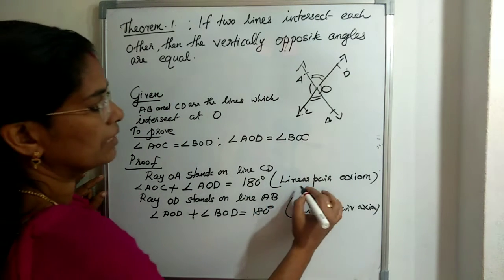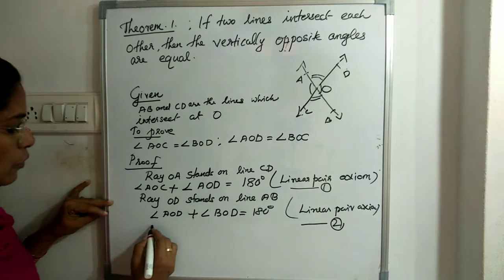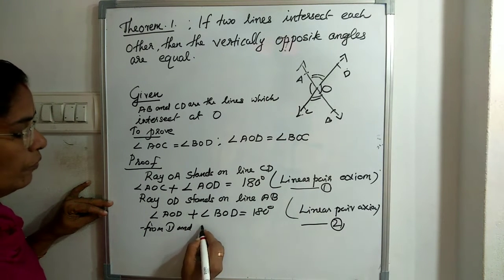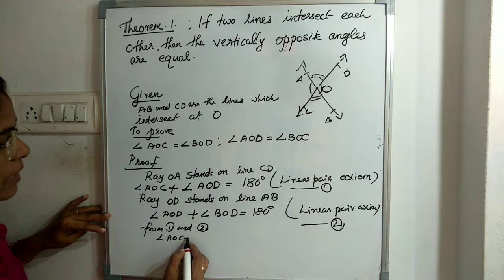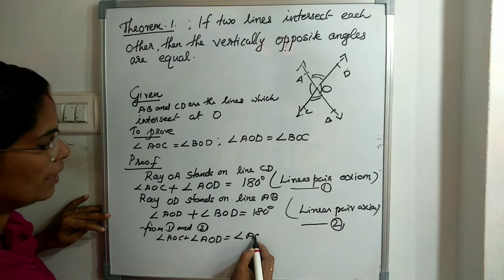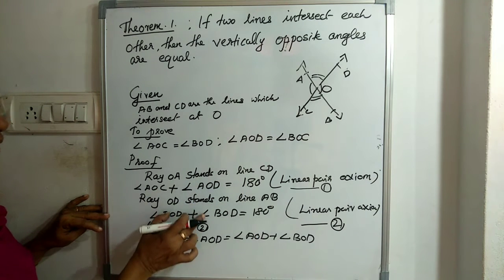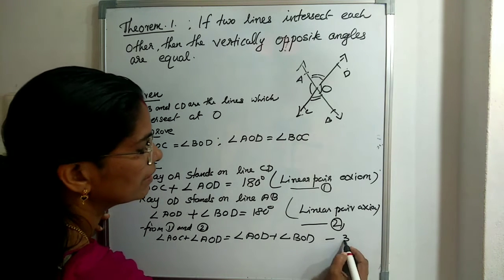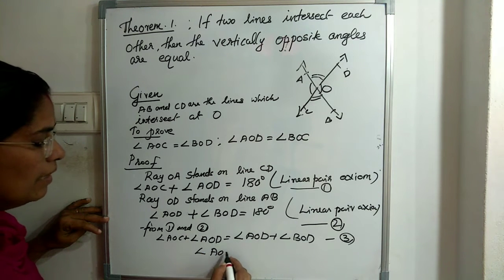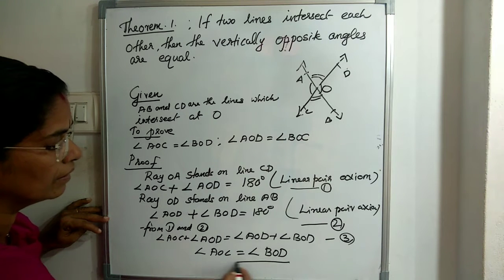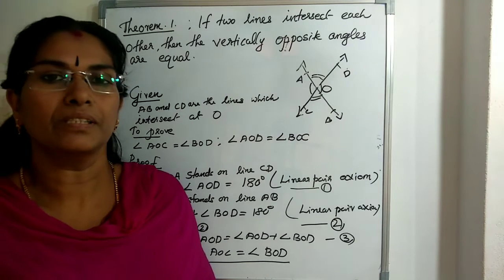We can label the two results as equation 1 and equation 2, making it easy to solve. From equations 1 and 2, since both right-hand sides equal 180 degrees, we can equate the left sides: angle AOC plus angle AOD equals angle AOD plus angle BOD. This is equation 3. Since AOD appears on both sides, we cancel it. The balance gives us angle AOC equals angle BOD — that is our first pair of vertically opposite angles proven.